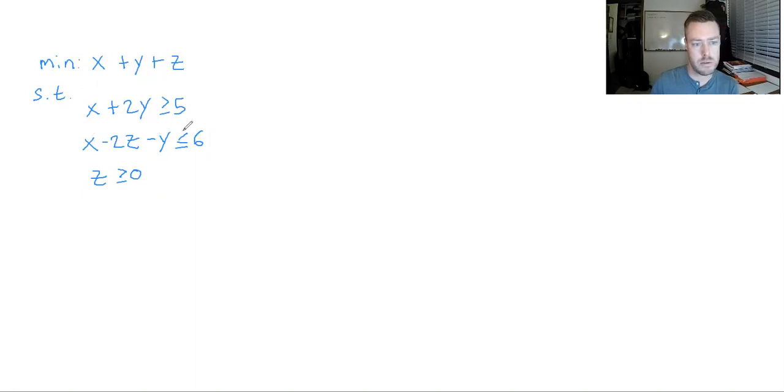Such that the constraints that we're given are x plus 2y is greater than or equal to 5, x minus 2z minus y is less than or equal to 6, where z is greater than or equal to 0.